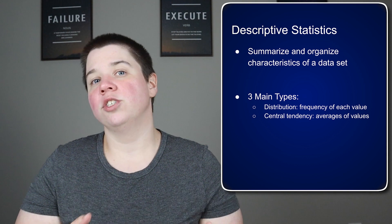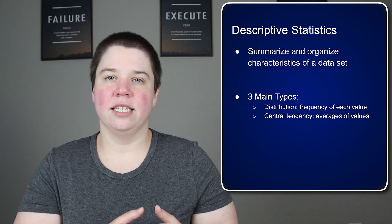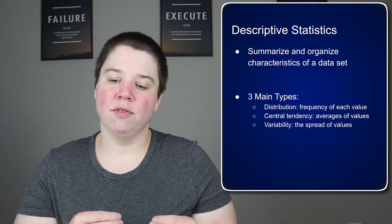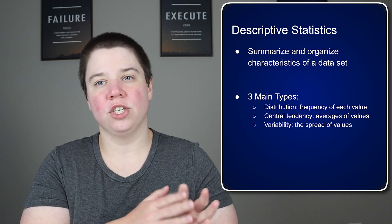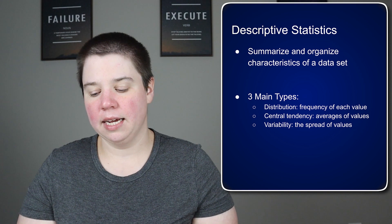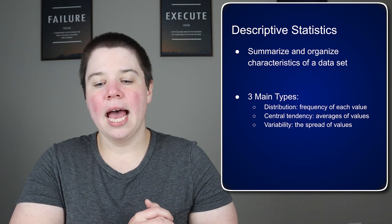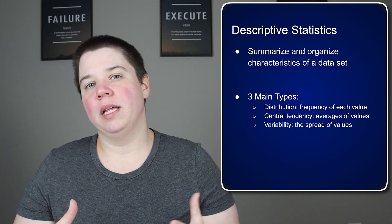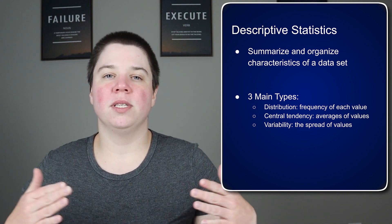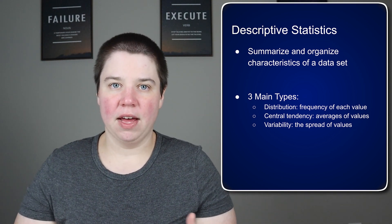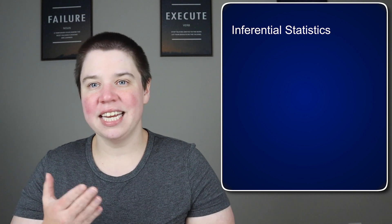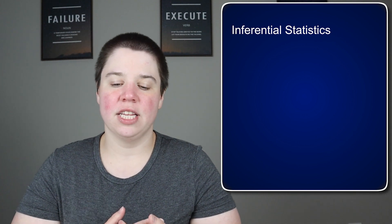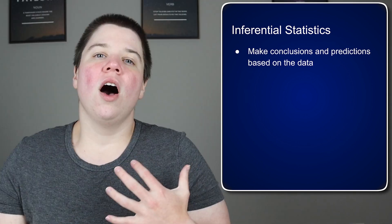There's central tendency — these are averages of the values, basically where the center of the data is. And then there's variability, which describes the spread of the values. These are things like standard deviation.